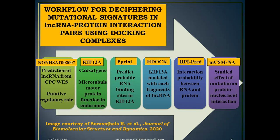This is the small workflow for deciphering mutational signatures in LNC RNA protein interaction pairs using docking complexes. Firstly, the LNC RNA NONHSAT002007 was predicted from CPC whole exome sequencing, which has shown a putative role in regulation. We selected KIP-13A protein as one of the CPC causal genes from our erstwhile study published in 2018, which was showing interaction with LNC RNA. Then the probable RNA binding sites in KIP-13A were predicted using the PPRINT server. KIP-13A was modeled with each fragment of LNC RNA using the HDOCK web server. The interaction probability between RNA and protein was assessed using the RK-PRED server. Finally, the effect of mutation on protein–nucleic acid interactions was analyzed using support vector machine tools.